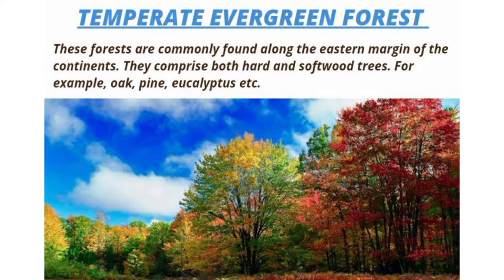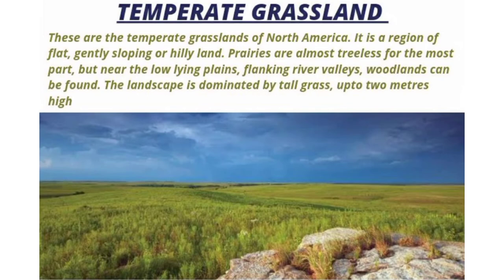Temperate grassland. These are the temperate grasslands of North America. It is a region of flat, gently sloping or hilly land. Prairies are almost treeless for the most part. Near the low-lying plains flanking river valleys, woodlands can be found. The landscape is dominated by tall grass up to two meters high.